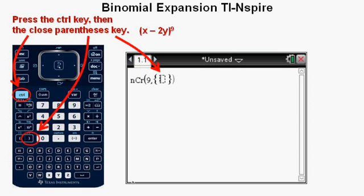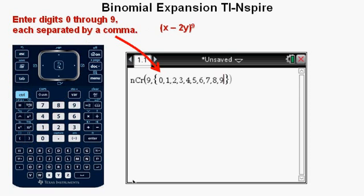Now enter the bracket by pressing the control key followed by the close parentheses key. You will have an open bracket with a cursor blinking within. Now enter the numbers 0 through 9, each digit separated by a comma.